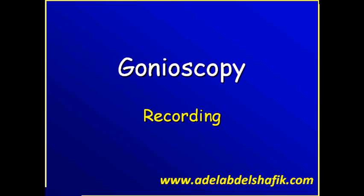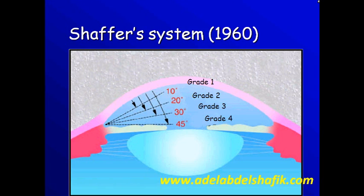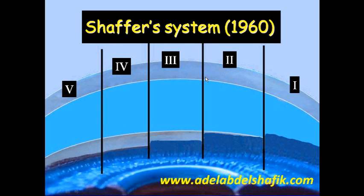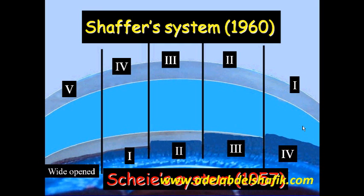Now, recording of the findings. There are different methods of classification. The Schaeffer method depends on a grid: grade 4 is the widely open angle and grade 0 is the closed angle. The reverse is also called the Schaeffer classification, where widely open is 0 and 4 is the closed. It's better to use plain English: widely open angle, partially opened angle, or closed angle.